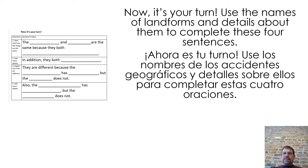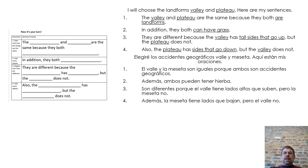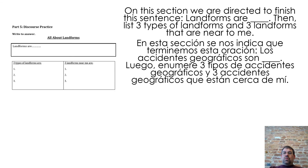Now it's your turn. Use the names of landforms and details about them to complete these four sentences. I will choose the landforms valley and plateau. Here are my sentences: 'The valley and plateau are the same because they are both landforms. In addition, they both can have grass. They are different because the valley has tall sides that go up but the plateau does not. Also, the plateau has sides that go down but the valley does not.'